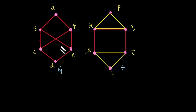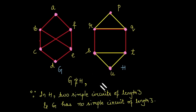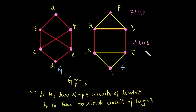You can clearly say that graph G is not isomorphic to H because in H there exist two simple circuits of length 3: the first is P-R-Q-P, and the second is S-T-U-S. But in graph G there does not exist any simple circuit whose length is 3. Due to this reason, graph G is not isomorphic to H.